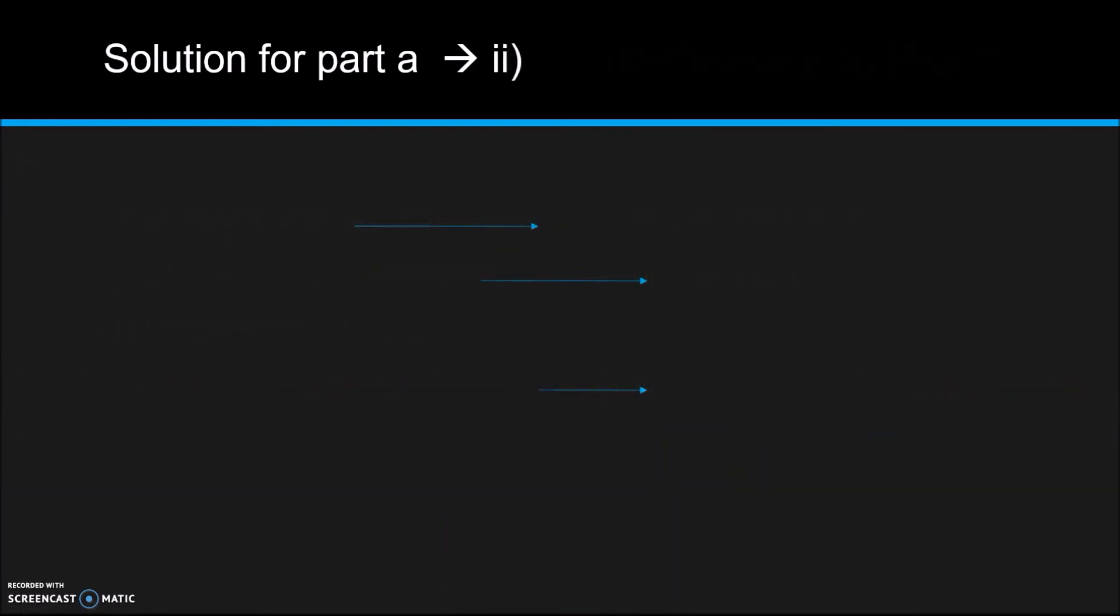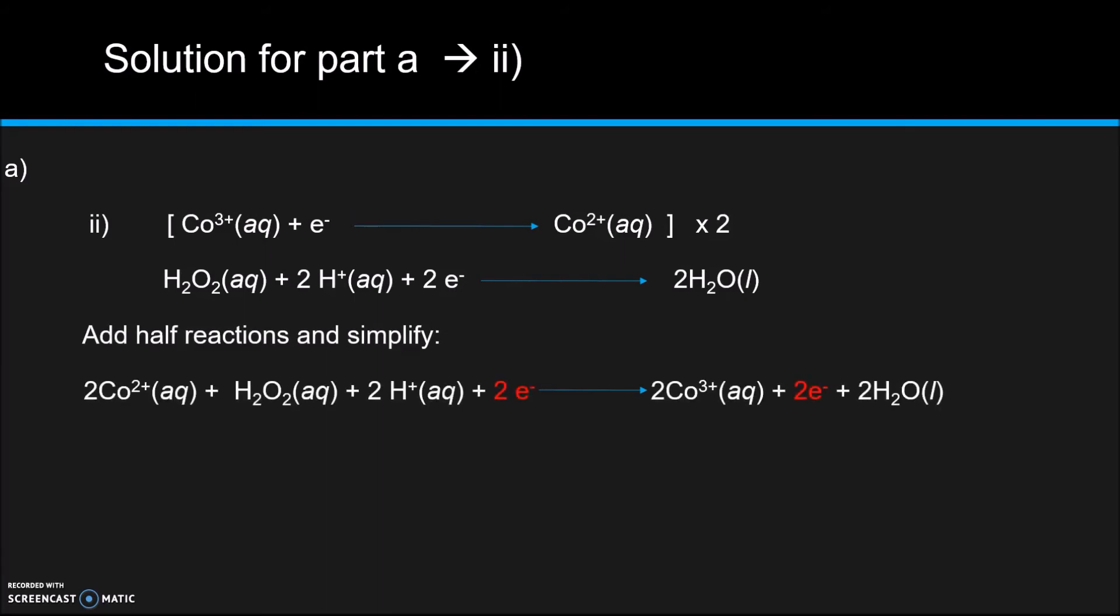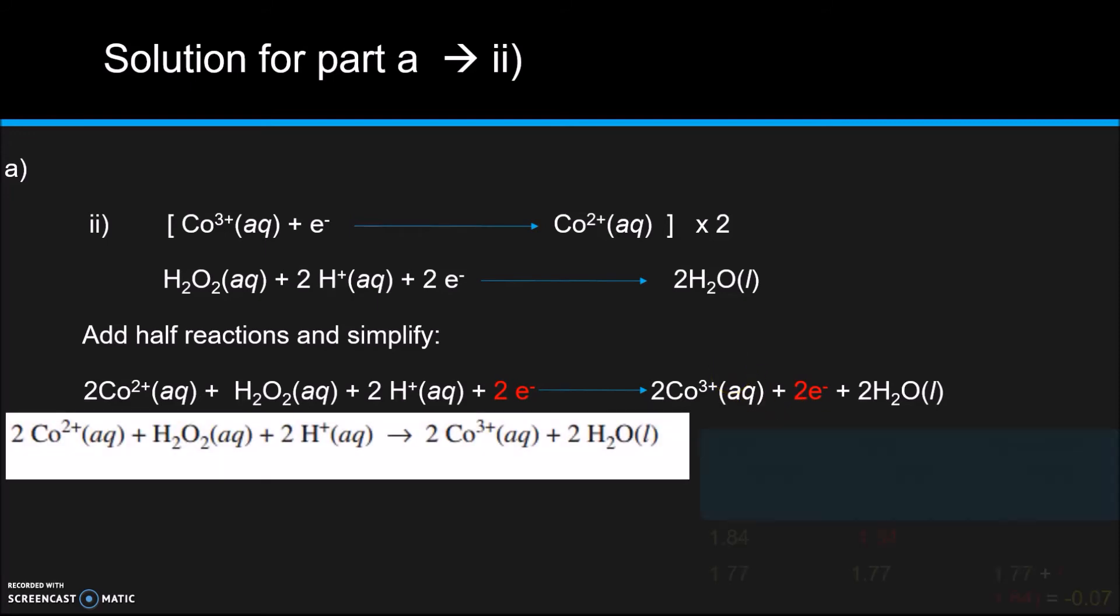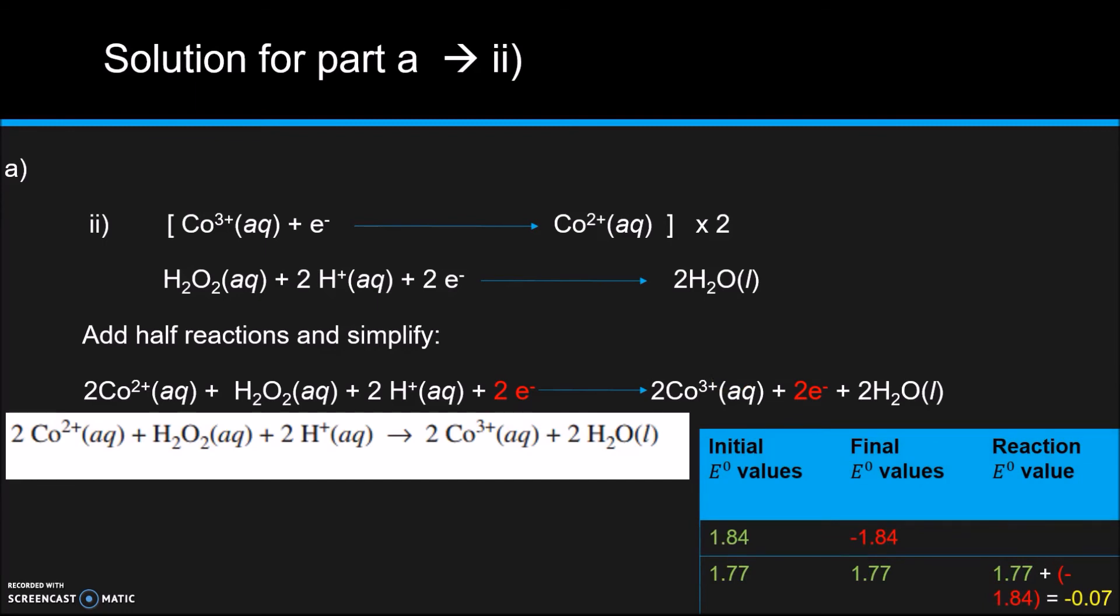So for part two of part A, it's basically the same procedure with the other two half reactions. So again, we're going to multiply and reverse the first one because we see that cobalt 3 plus should be on the other side. And then we're going to add the half reactions, simplify once again. So this time only the electrons are common. So we eliminate those to get the overall reaction. And then we're going to flip the sign on the E⁰ value of the first one in order to represent what change we made. And then we're going to add them to get an overall E⁰ value of negative 0.07.